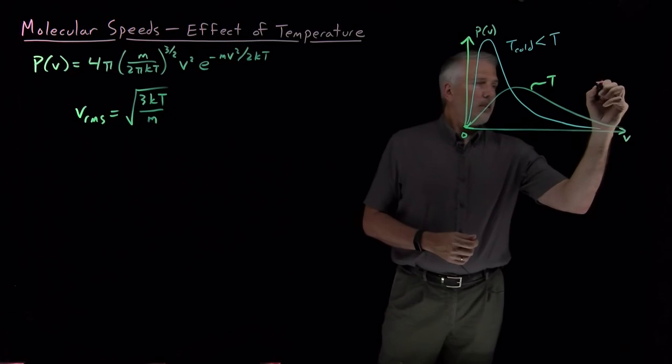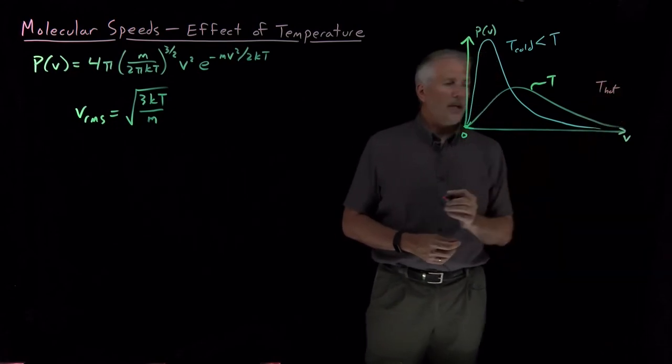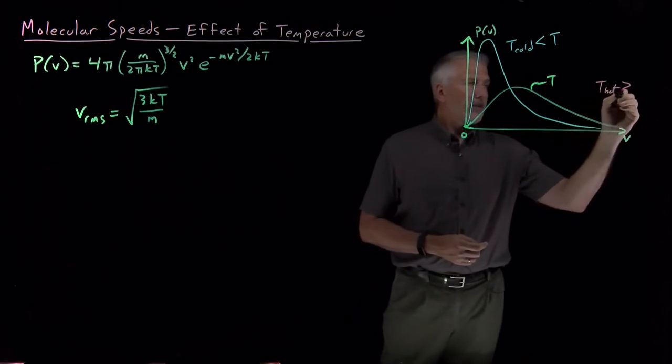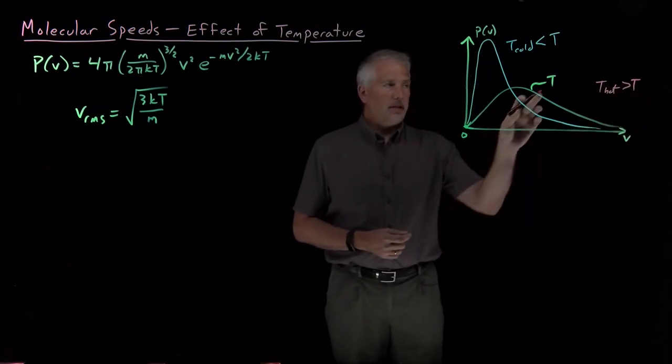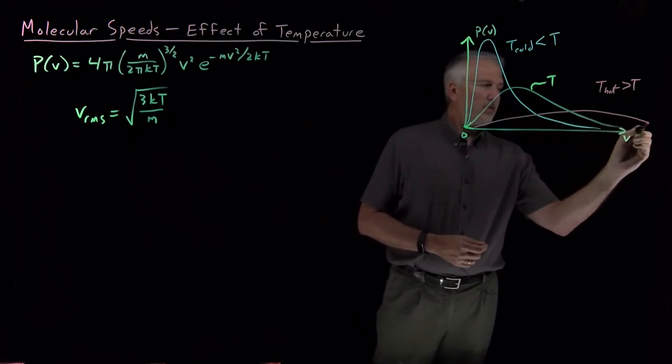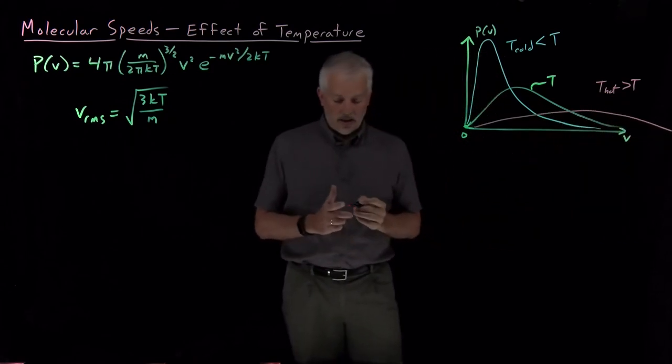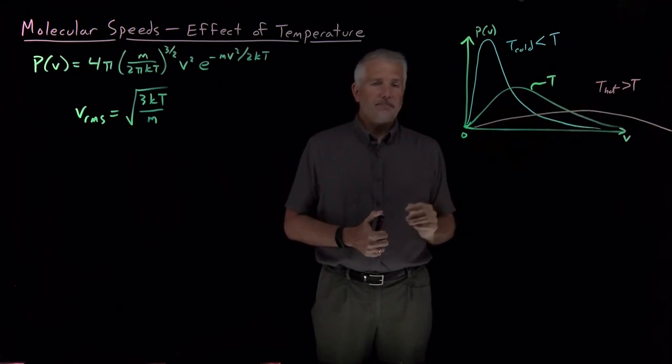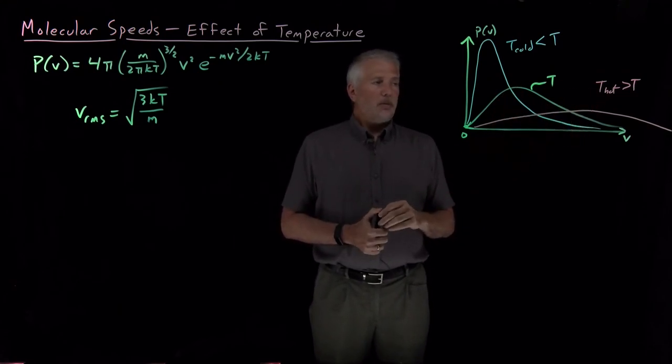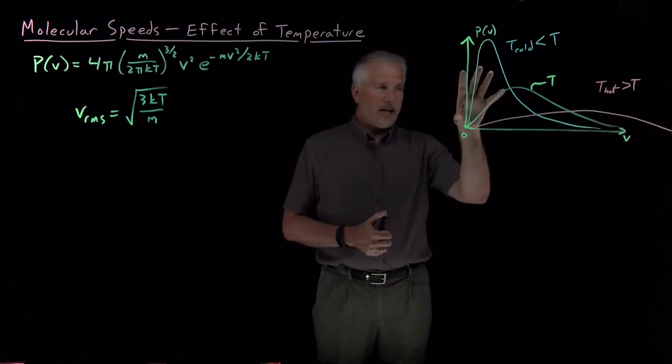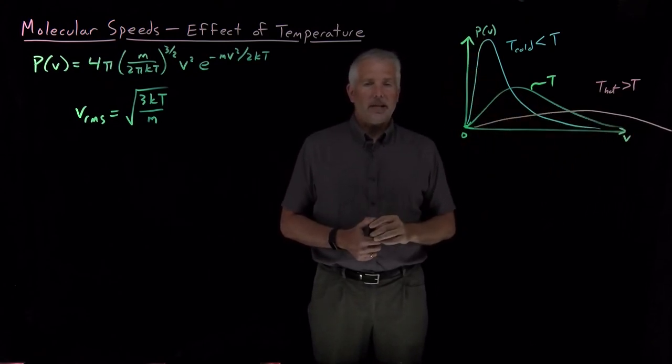If, on the other hand, I do this for a relatively hot temperature, one that's larger than this temperature in the middle, then what this distribution is going to look like is something like this. The maximum is going to be shifted to larger speeds, as we'd expect, and this curve has to get lower because, since this is a graph of probability, the areas under each of these curves should be exactly the same.